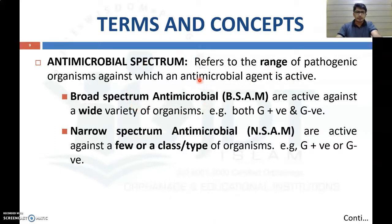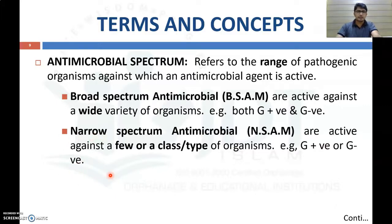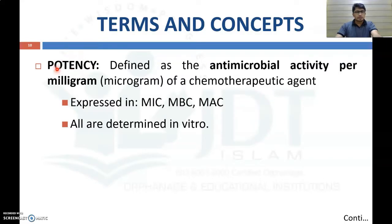According to that range, the spectrum can be broad spectrum or narrow spectrum. Broad spectrum antimicrobial agents are active against a wide variety of organisms, including both gram-positive and gram-negative microorganisms. Narrow spectrum antimicrobials are active against few or a specific class of microorganisms, either gram-positive or gram-negative bacteria. Next, potency is defined as the antimicrobial activity per milligram of chemotherapeutic agent — the minimum concentration required for antimicrobial activity per milligram.